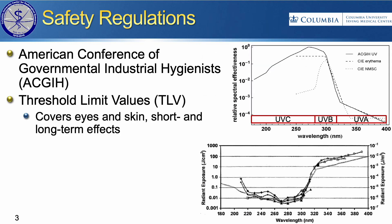All of these causes of concern for health effects are built into safety regulations, including the ACGIH limits. They typically have what they call the TLV, which is supposed to cover all safety and health effects for eyes and skin for short and long-term exposures, all built into one safety factor. There are various sources of data used to establish these TLVs from decades' worth of work.